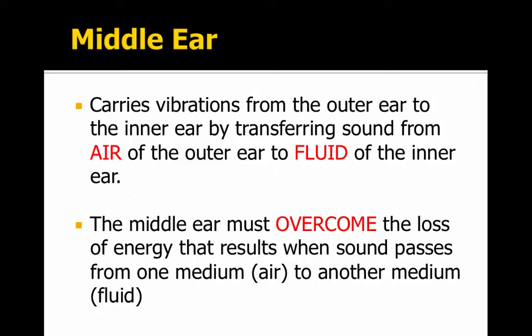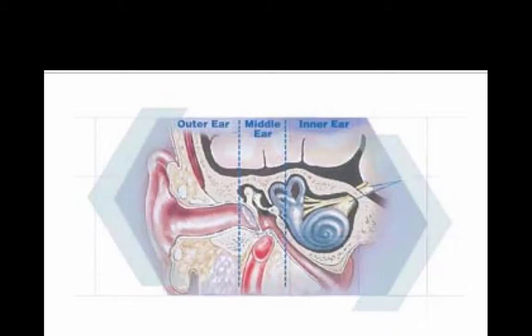The middle ear carries vibrations from the outer ear to the inner ear by transferring sound from the air of the outer ear to the fluid of the inner ear. The middle ear must overcome the loss of energy that results when sound passes from one medium, air, to the other, fluid. The middle ear is the impedance matcher that helps to overcome this loss of energy from air to fluid.